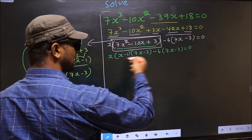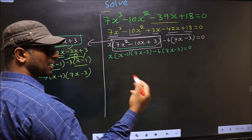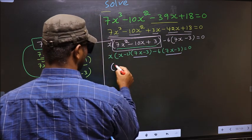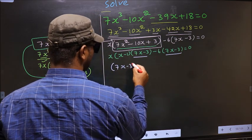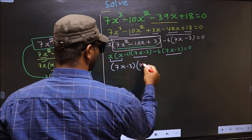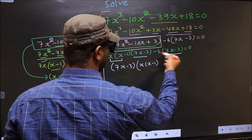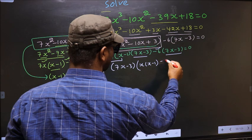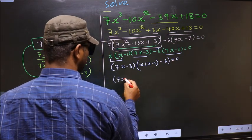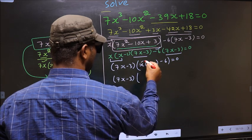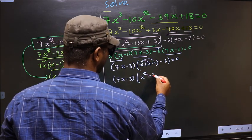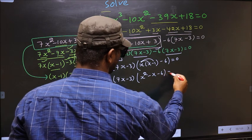From this equation, what can be taken out common is (7x - 3). So (7x - 3) outside; we are left with x(x - 1) and -6. That gives (7x - 3)[x(x - 1) - 6] = 0. Opening the brackets: (7x - 3)(x² - x - 6) = 0.